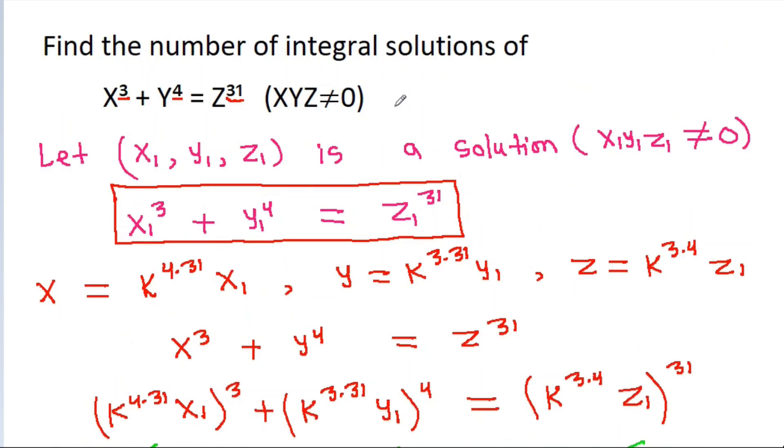Since we have found one valid non-zero solution, the equation x³ + y⁴ = g³¹ will have infinitely many integral solutions.